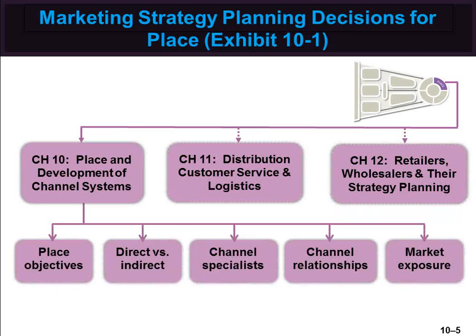Among the key strategy decision areas in distribution, the organization must develop objectives for place. The marketer must choose the type of channels, such as direct to customer or indirect which involves many intermediaries. If the chosen channel is indirect, the marketer must determine the degree of market exposure desired, decide on the types of intermediaries needed, how many of them are needed, and how to manage them. The type of channel is also related to the level of customer service required by the target customer. Finally, physical distribution activities must be developed and managed in order to achieve the distribution objectives.